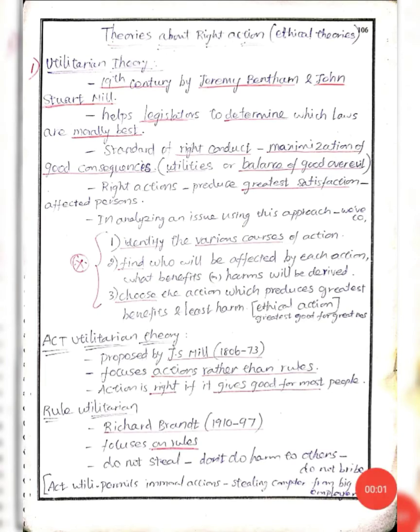Dear students, this is your last topic from Unit 2. In this video, we are going to discuss about some ethical theories. We have six theories. The first one is the Utilitarian theory. In the 19th century, Jeremy Bentham and John Stuart Mill proposed it, and it helps legislators choose the right law.